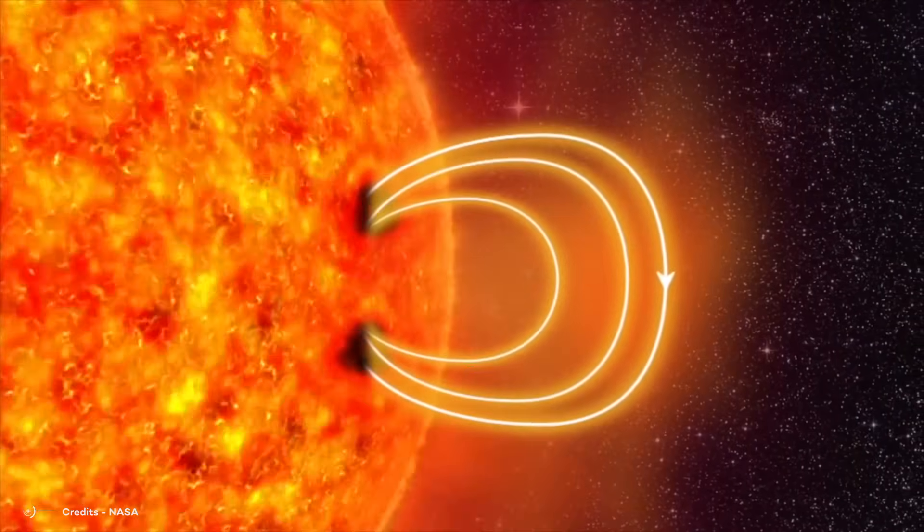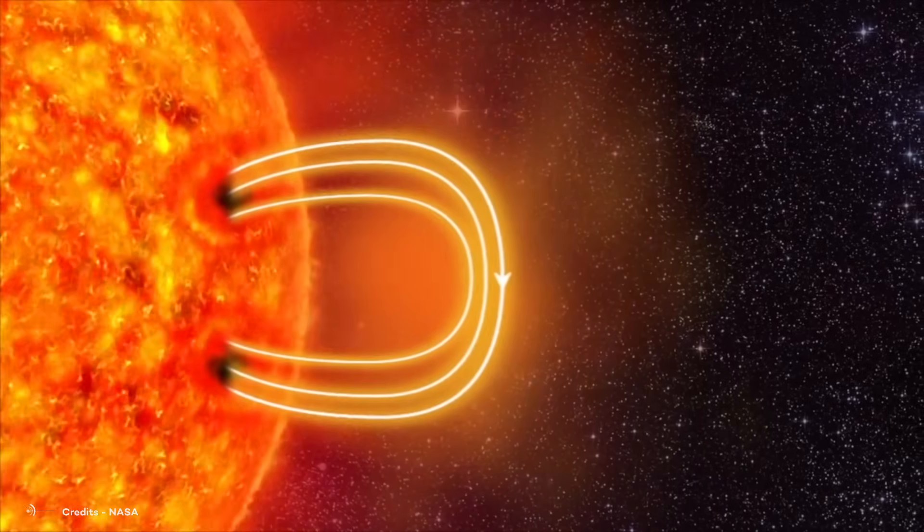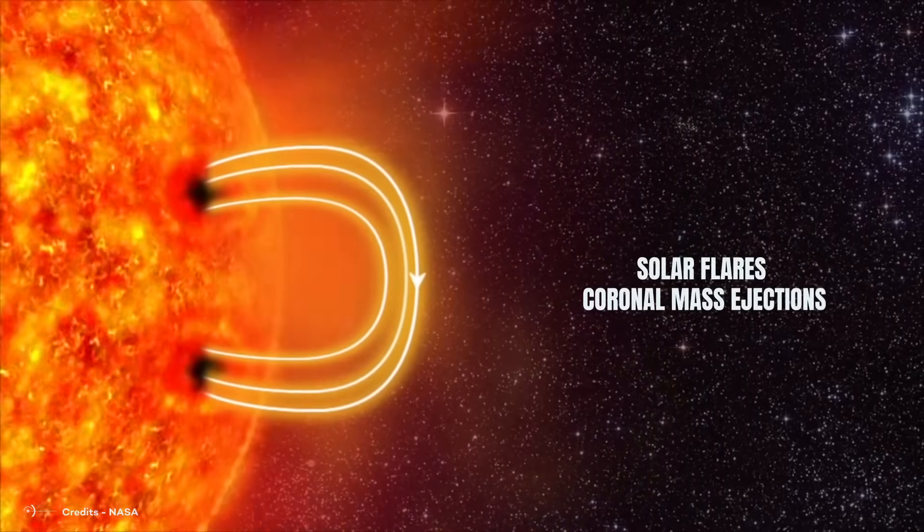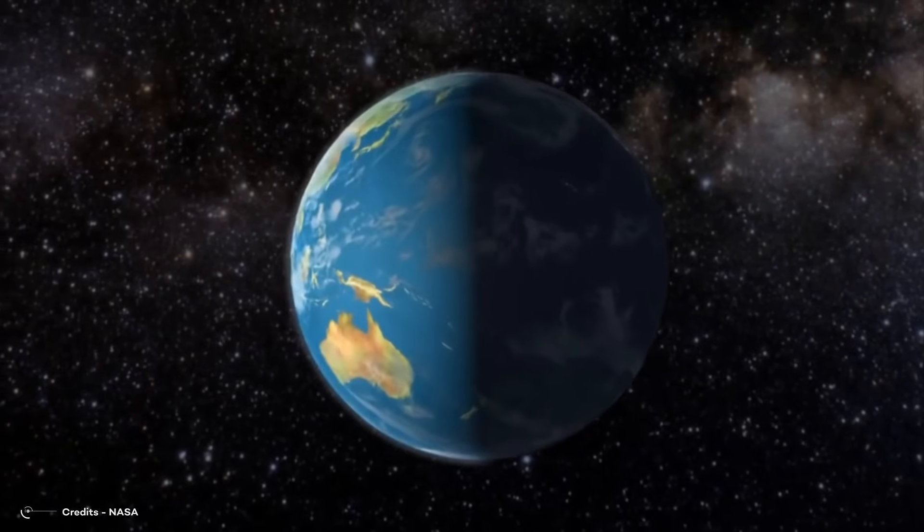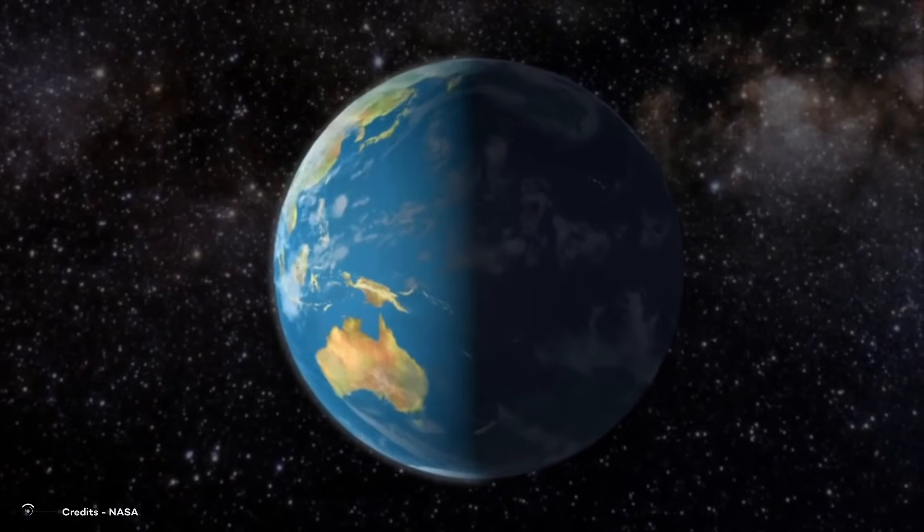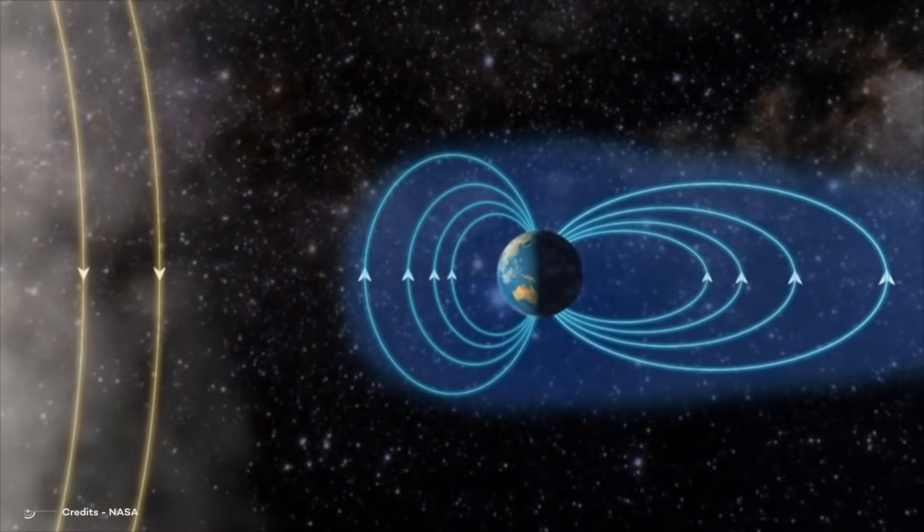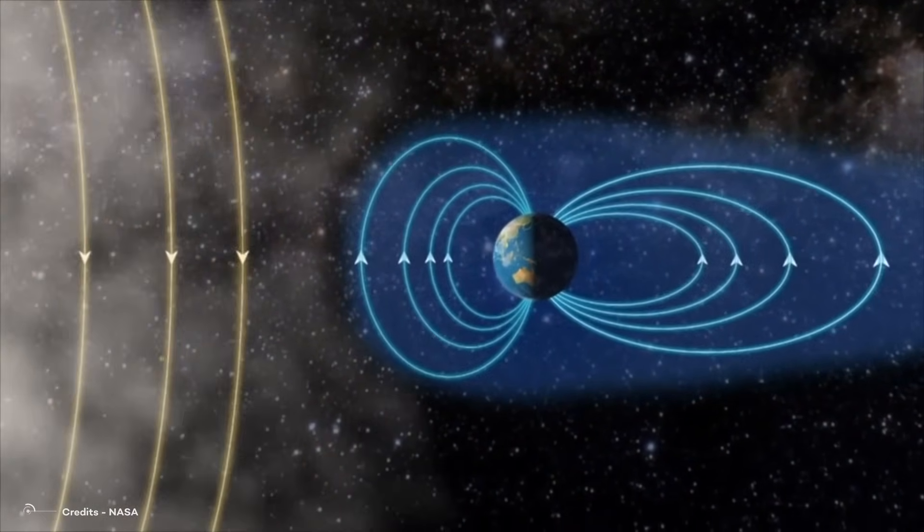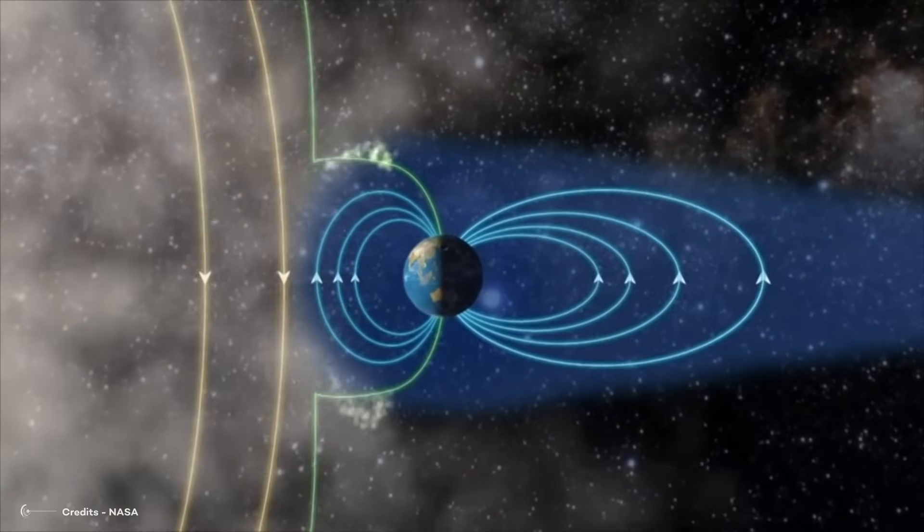However, it does not intercept all such particles, especially during periods of heightened solar activity, like solar flares and coronal mass ejections. In instances of solar activity, astronauts in Earth's orbit might require additional protection to avoid increased radiation exposure. This emphasizes that the Earth's magnetic field offers only partial resistance to space-borne particle radiation.